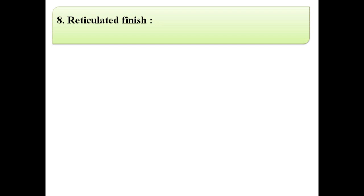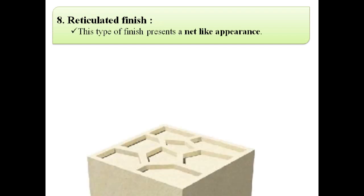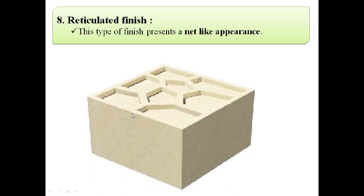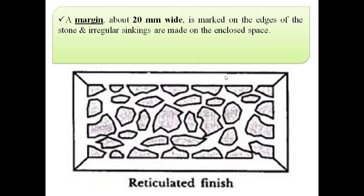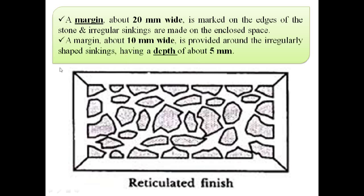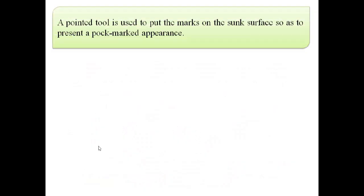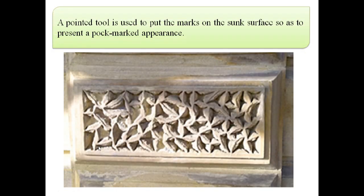The next finish is reticulated finish. This type of finish presents a net-like appearance, as shown in this image. A margin about 20 mm wide is marked on the edges of the stone and irregular sinkings are made on the enclosed space. A margin about 10 mm wide is provided around the irregularly shaped sinkings having a depth of about 5 mm. A pointed tool is used to put marks on the sunk surface so as to present a pockmarked appearance.